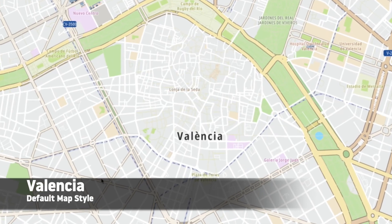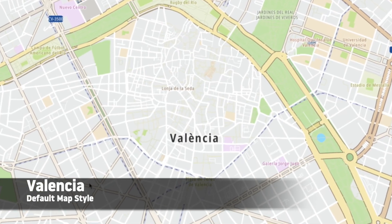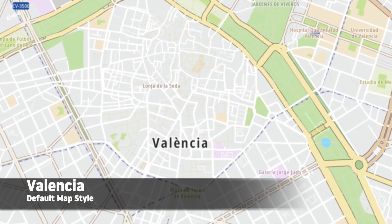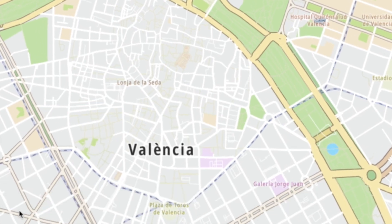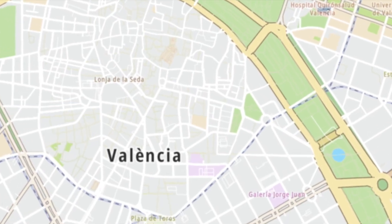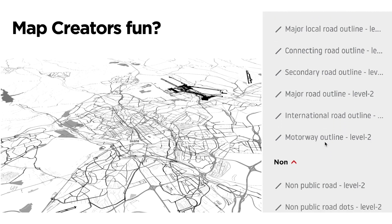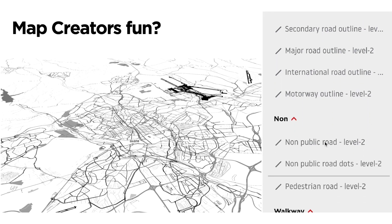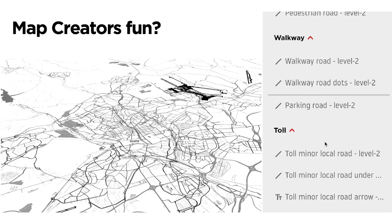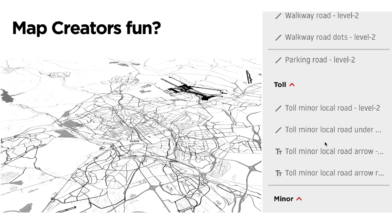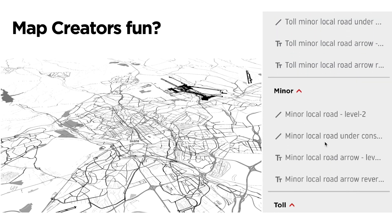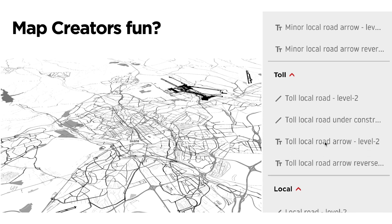However, there is one catch. Most mapping services only use their default map style, which may or may not be easy to read. TomTom's first maps weren't complex and were thus easy to read. Over the decades, we developed increasingly minute map features, until there were over 900 layers.